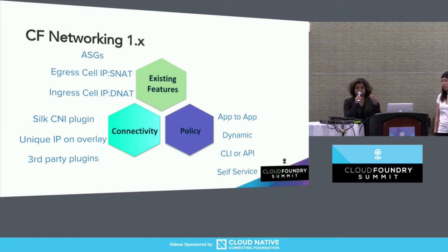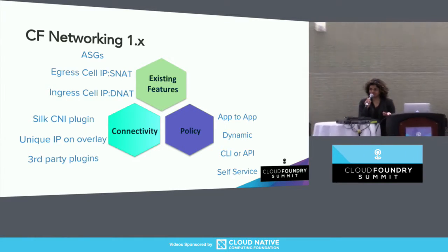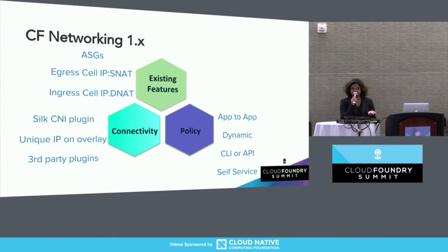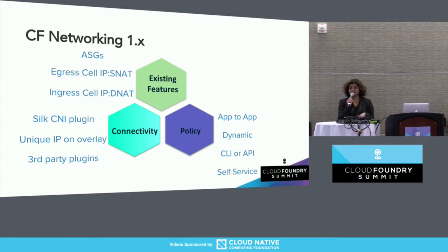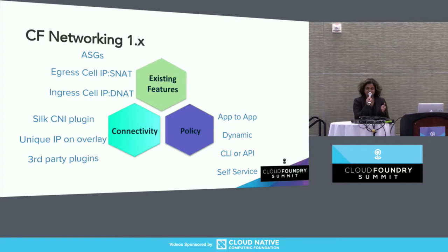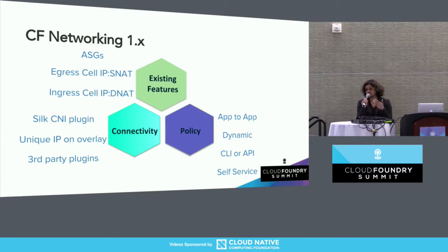ASGs — application security groups — are ways to configure policy for traffic going from CF apps to external things. What we did do is embrace CNI, the container networking interface, which is a standard. That enables us to allow third parties to plug into Cloud Foundry — for example, the recently released NSXT integration with Pivotal Cloud Foundry that leverages this CNI pluggability. The batteries-included version of CNI is a plugin called Silk — hence the spider web on the hat. With Silk we basically put all containers on an overlay network running VXLAN and give every single container its own IP. The next thing we did was add policy, so you now have app-to-app dynamic policy. We currently have support through the CLI and the API to configure this policy, and we've heard feedback that it would be better if this policy were in the app manifest.